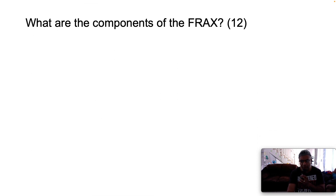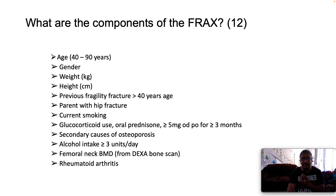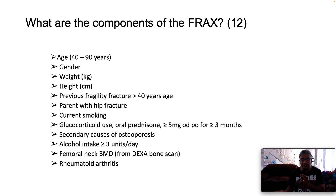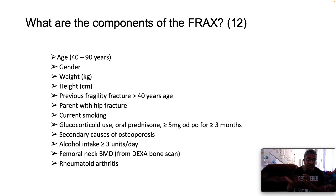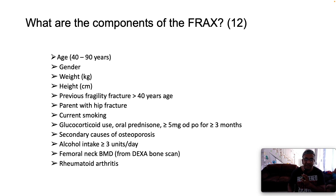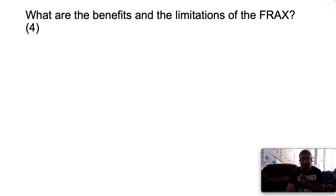What are the components of the FRAX index? For 12 marks: age between 40 and 90 years, gender, weight, height, previous history of fragility fracture over age 40, parent with a hip fracture, current smoking status, glucocorticoid use (above 5mg daily for at least the last three months), secondary causes of osteoporosis, alcohol intake above three units per day, femoral neck bone mineral density from the DEXA scan, and rheumatoid arthritis.